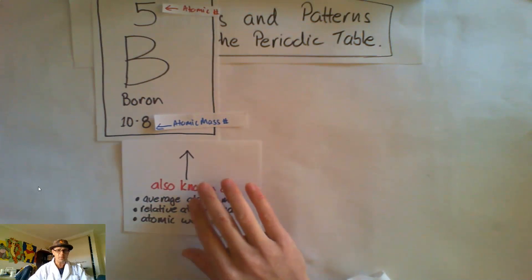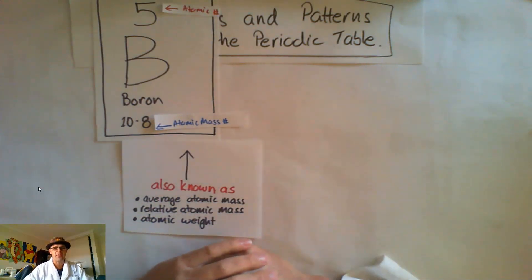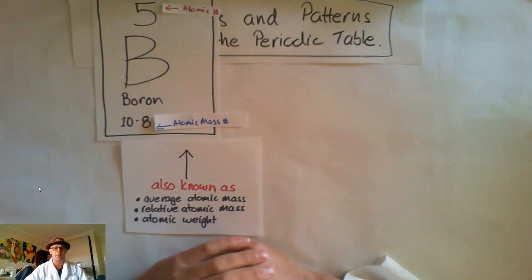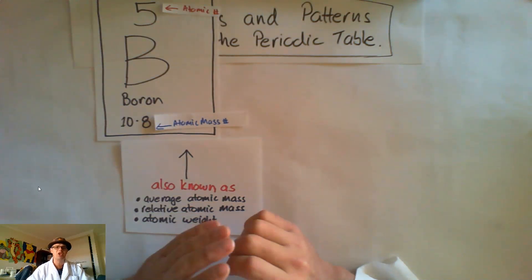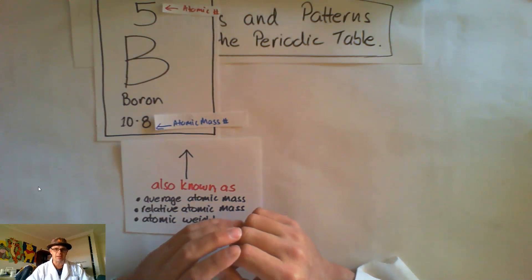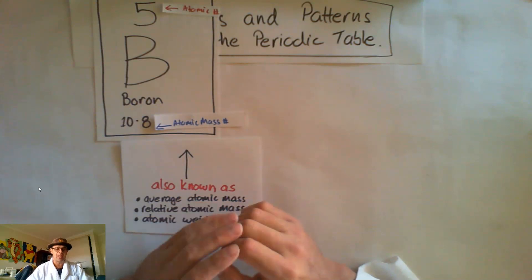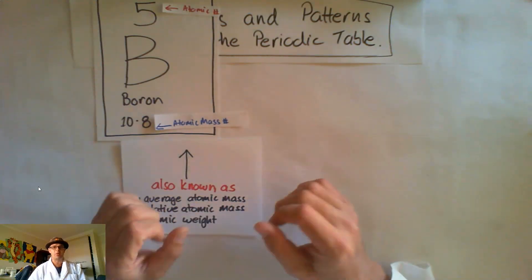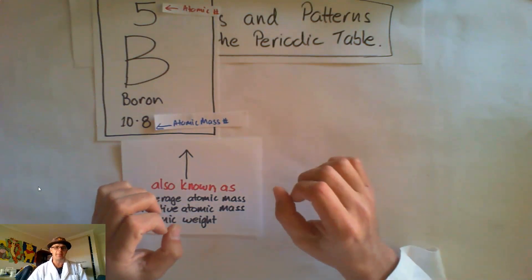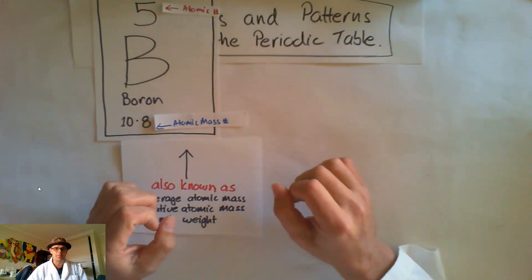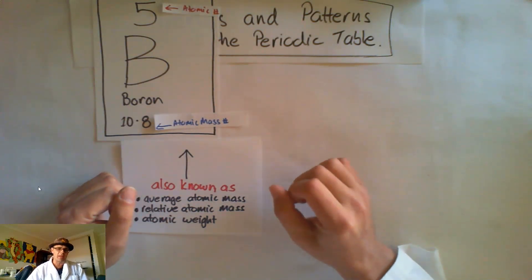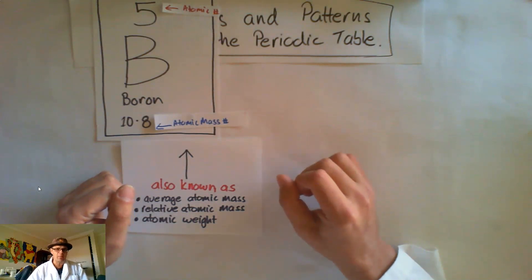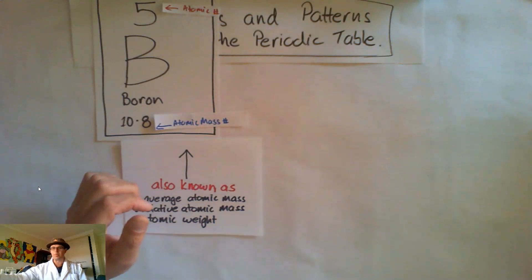The atomic mass number can also be known as the average atomic mass, the relative atomic mass, or atomic weight. Now that is different to mass number. When we're talking about mass number, we're generally talking about an isotope of a particular element. If you want to know more about that, you need to watch the video 'atomic mass number versus mass number,' but it has to do with isotopes.